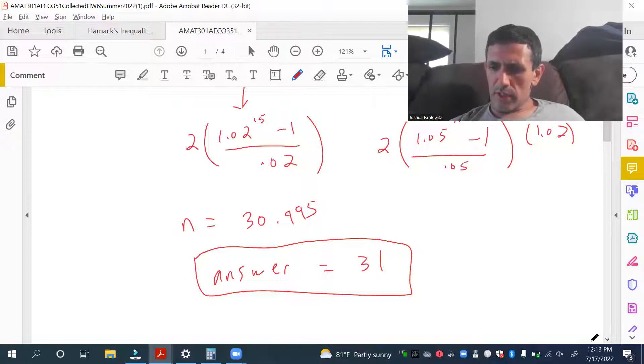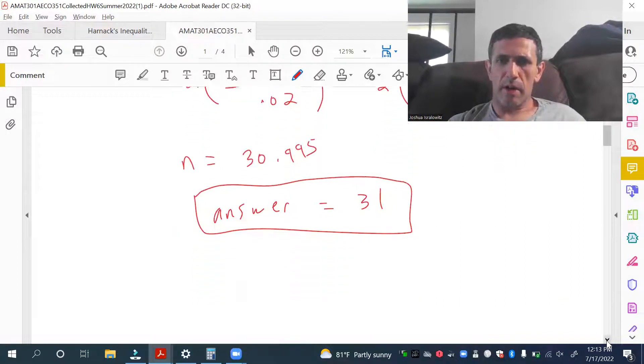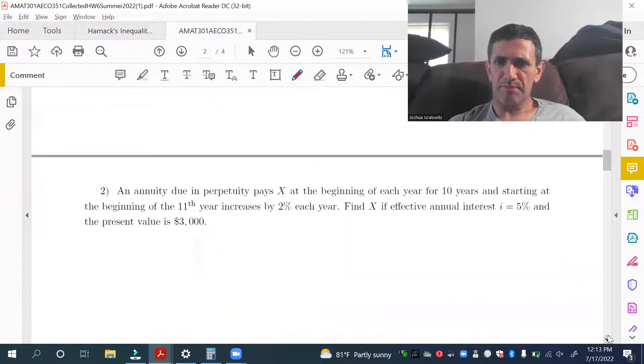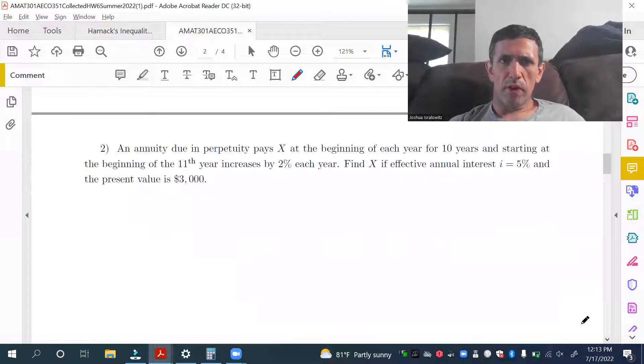The next one is a little tricky to really precisely nail down. But again, time diagram really, really helps. So, we have an annuity in perpetuity. It's an annuity due. Pays X at the beginning of each year for 10 years. And starting at the 11th, beginning of the 11th year, which is T equals 10, increases by 2% each year. By an exit, the effect of annual interest rate is 5%. Present value is 3,000. So, let's draw a time diagram.